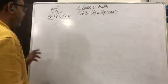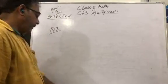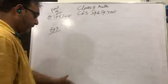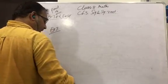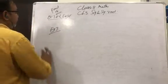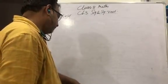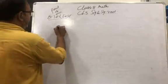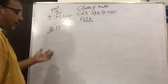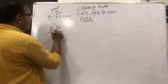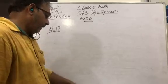Now, in example number 7 — in the previous video I covered example number 6. Now example number 7: find the least square number divisible by each of 8, 9, and 10. Actually, let us do exercise 3D question number 17: find the least square number which is exactly divisible by each of the numbers 6, 9, 15, and 20.